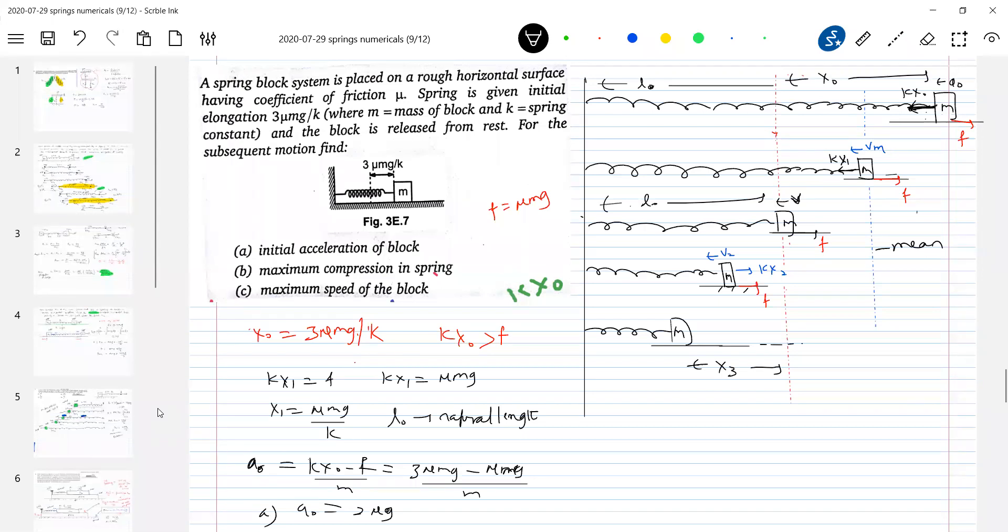So what you can write it. This is the mean. So at mean only, it should be that one where the net force on the block is 0 in spring block system, that is the mean position. So here, can we calculate x1? So what should be the Kx1? Kx1 should be equal to μMg. So we have an idea like this.